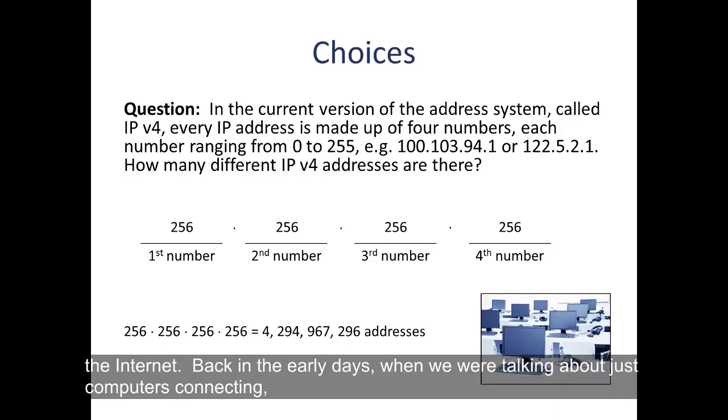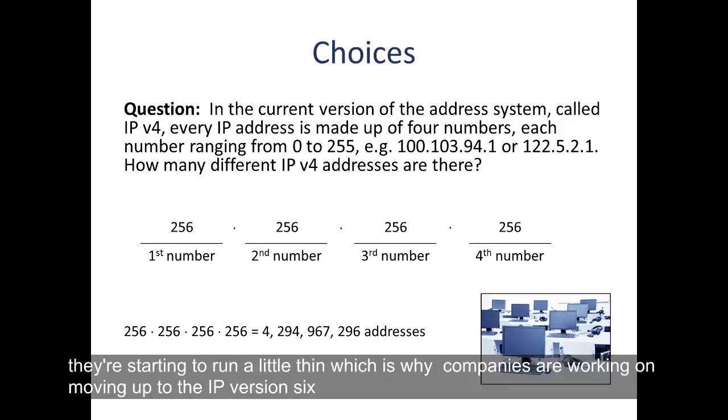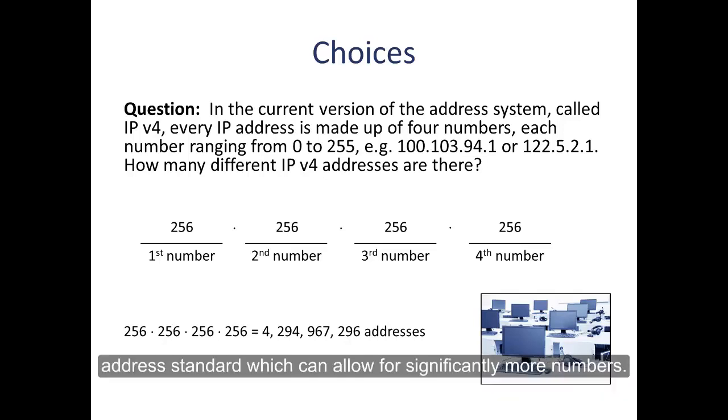Back in the early days when we were talking about just computers connecting, this seemed like plenty. But now when computers and phones and tablets and smart watches and all this huge proliferation of devices are all looking for a number, they're starting to run a little thin, which is why companies are working on moving up to the IP version 6 address standard, which is going to allow for significantly more numbers.